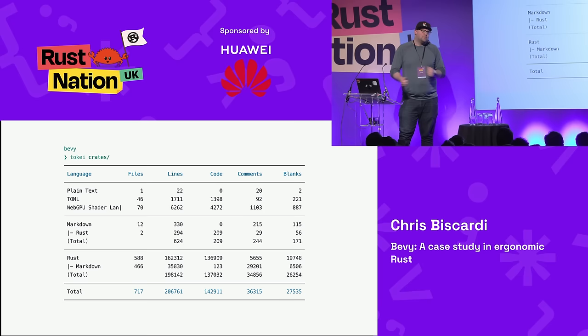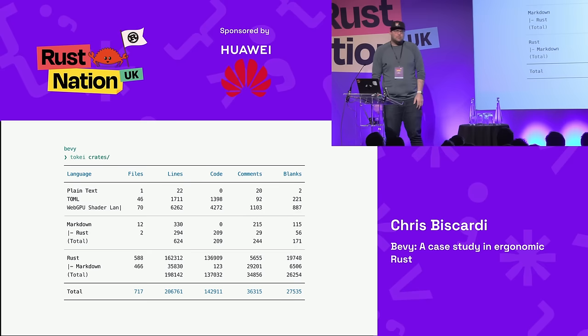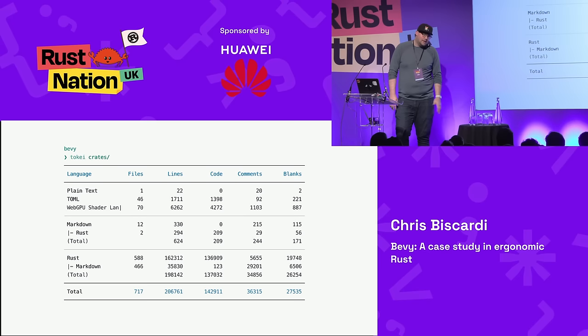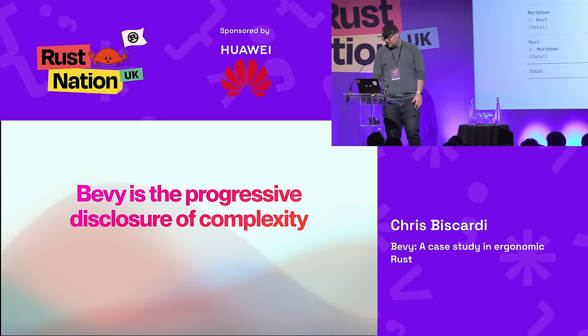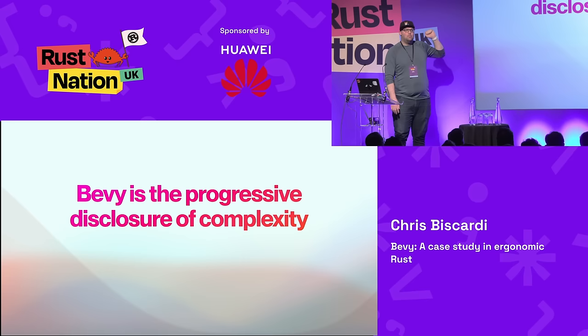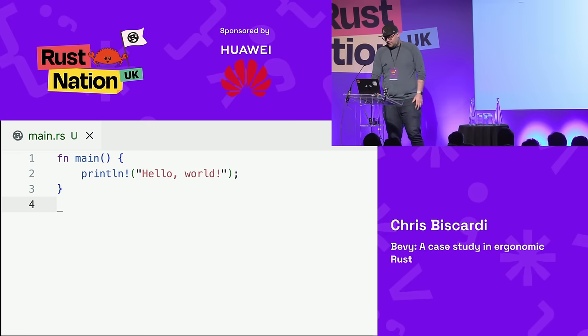Bevy is a very large project — 130,000-plus lines of Rust. I do a lot of educational work with Rust, talking about writing your first 10, first hundred, first thousand lines. The main takeaway from this talk is that Bevy deals with a whole stack of APIs that all compose together in different ways. To me, Bevy is basically the progressive disclosure of the complexity of building these kinds of applications and games.